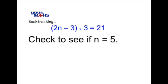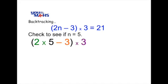So if n equals 5, we can see in the brackets that we've got 2 multiplied by 5 take 3. And that will give us a result of 10 take 3 in the brackets. And we can simplify that further by saying 10 take 3 is 7.